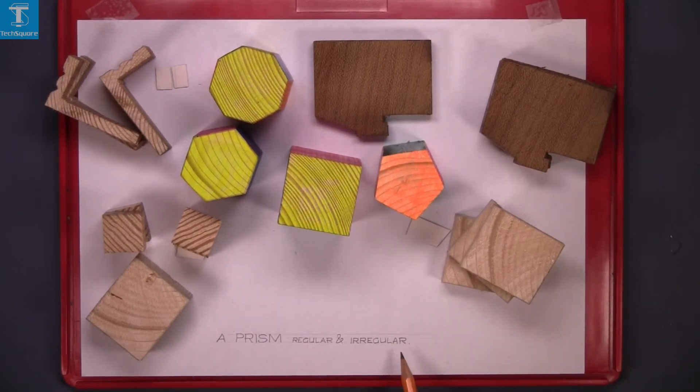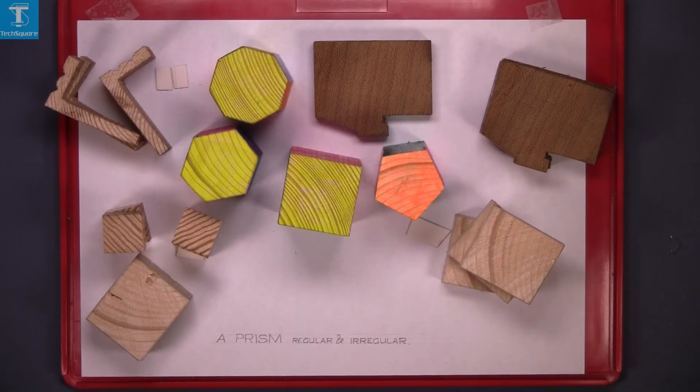So there's regular prisms and irregular prisms. That's orthographic projection prisms one complete.